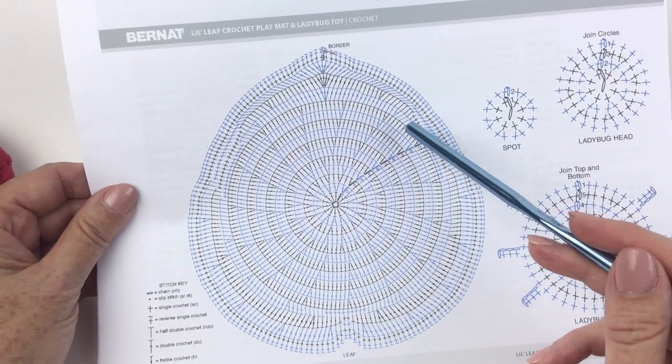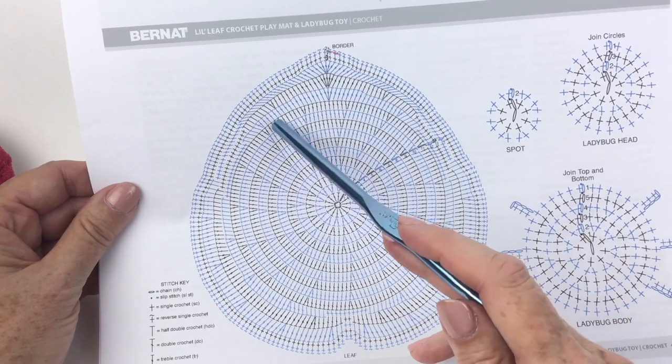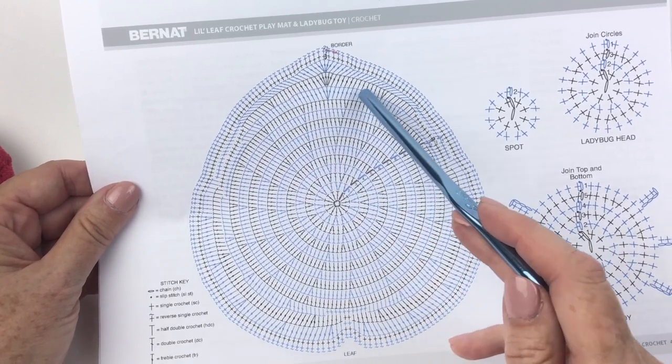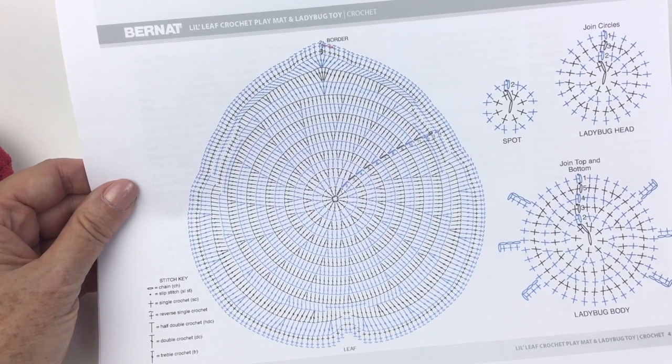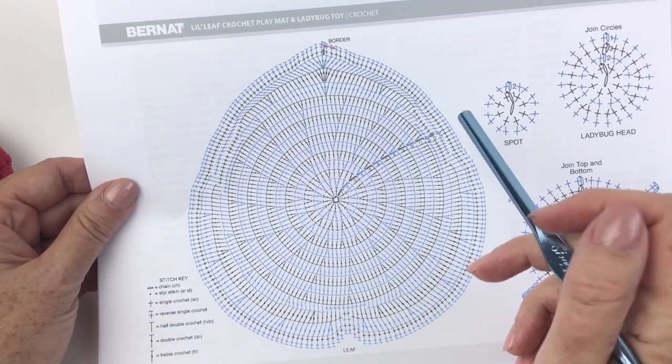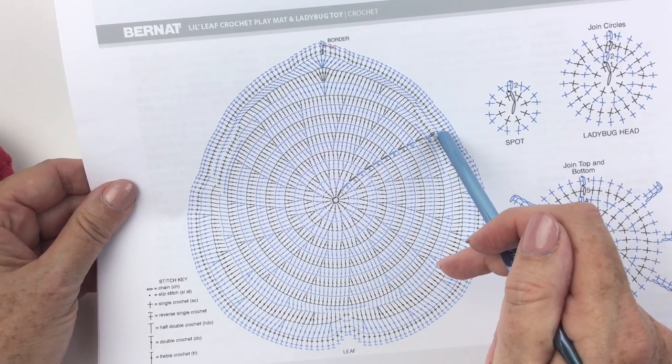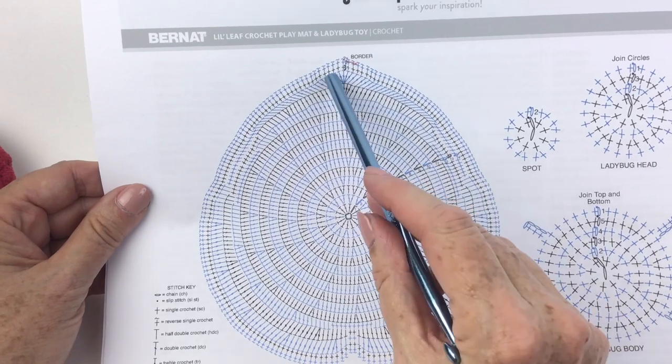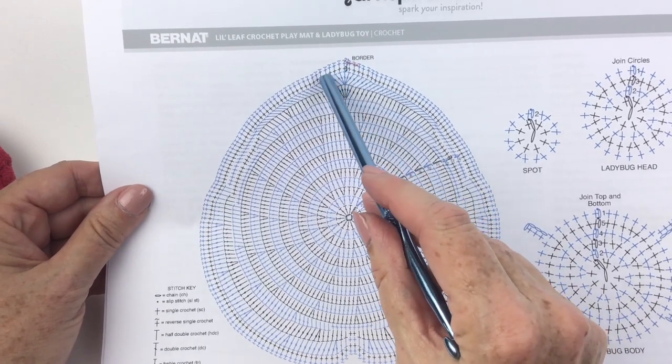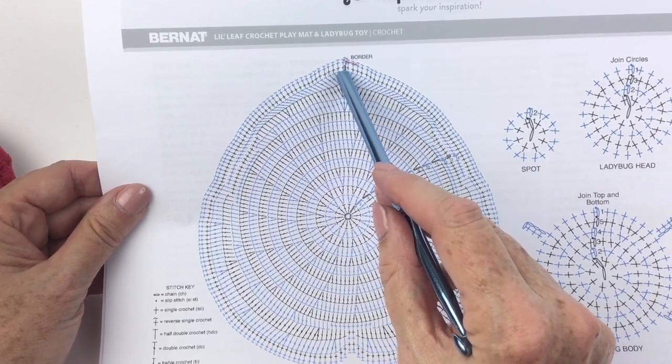So 12, 13, and 14 are here. You can see we have some single crochets, followed by some half doubles, and double, double, double. Got some treble action going on down here, and you can follow along both in the diagram and with the written instructions. But this last, so you've got up to round 14, and then these last two rounds that you see are the diagram are the border. Here's round one of the border and round two of the border, and as you can see, you start up here at the tip.